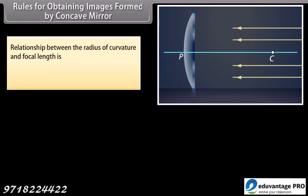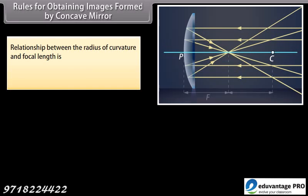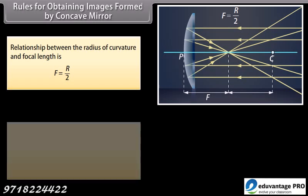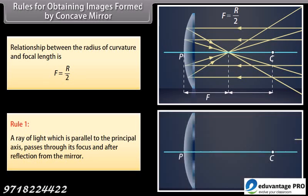Rules for obtaining images formed by concave mirrors. The relationship between the radius of curvature and focal length is F = R/2. Rule 1: a ray of light which is parallel to the principal axis passes through its focus after reflection from the mirror.